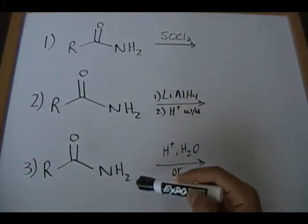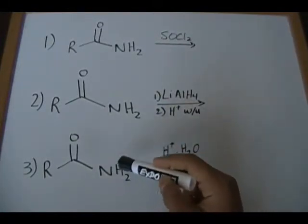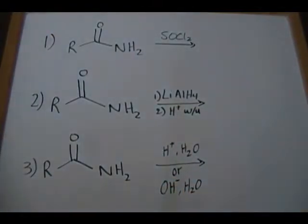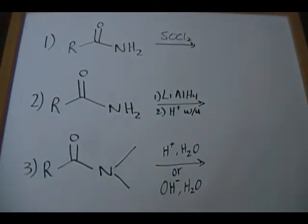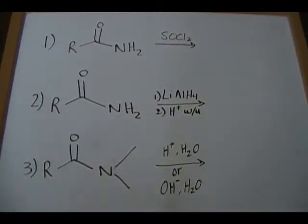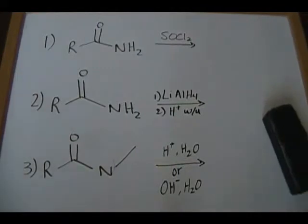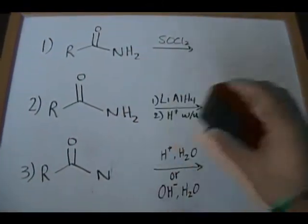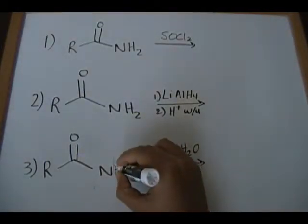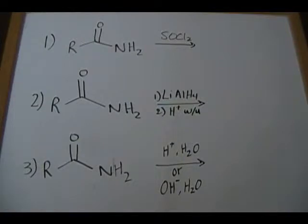Not all amides are going to take the same structure — this NH₂ portion is not always going to be the same. You could have a carbon group attached to the nitrogen, for example two methyl groups hanging off it, and that is still considered an amide. Based on the level of substitution — the number of carbon groups attached to the nitrogen — it could be considered a primary, secondary, or tertiary amide.